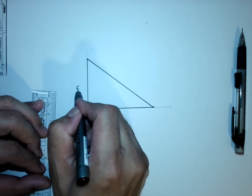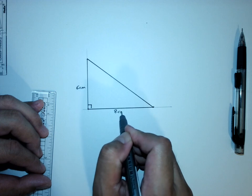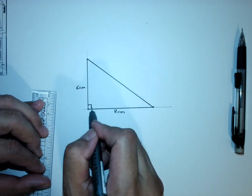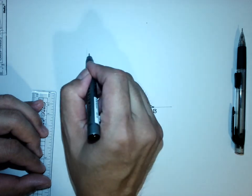With this part 6cm, 8cm. And of course, to label this triangle, you start with A, B, and C.